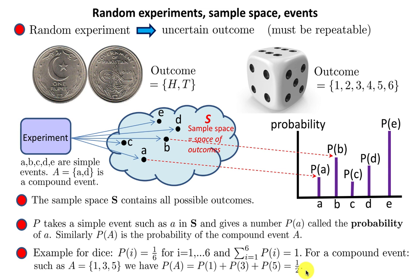Similarly, if A was {1, 2, 3, 4, 5, 6}, we would add 6 numbers, all of which are 1/6, and get 1. That's exactly what is being said here.